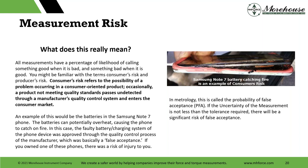The term most people know, besides type 2 error, would be consumer's risk and producer's risk. Consumer's risk refers to the possibility of a problem occurring in a consumer-oriented product — occasionally, a product not meeting quality standards passes undetected through a manufacturer's quality control system and enters the consumer market. If we look at the Samsung Note 7, batteries were overheating. Airlines were asking people not to bring them on board. The faulty battery charging system was approved through the quality control process — in metrology terms, that's a false accept, or PFA: probability of false accept. If you owned one of these phones, there was a risk of injury to you.